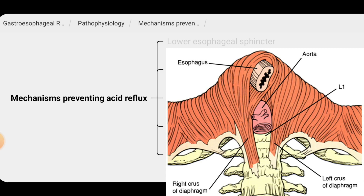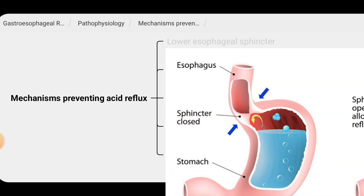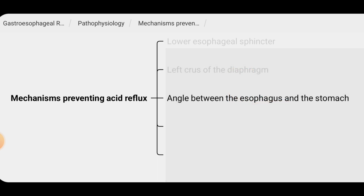The right crus of the diaphragm forms a sling-like structure around the esophagus, which helps to create a high pressure zone that keeps the lower esophageal sphincter closed and prevents stomach acid from flowing back into the esophagus.